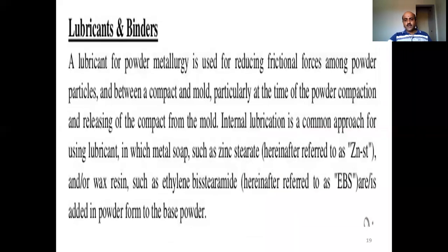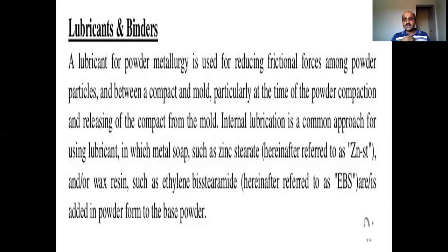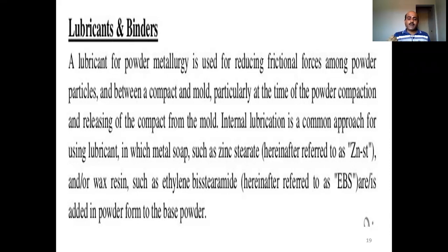When providing the shape for the powders, it is very much required for us to add lubricants and binders. The main purpose of adding lubricant is to reduce the frictional forces among the powder particles and between a compact and a mold, particularly at the time of powder compaction and releasing of the compact from the mold. In order to reduce these frictional forces — whether between powder particles themselves or between the compact and the mold — the lubricant will be added for the metal powders.